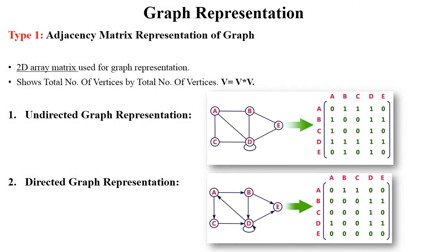Next is graph representation. A graph can be represented in two ways: matrix format or linked list format. The first type is adjacency matrix representation. For adjacency matrix, we use a two-dimensional array matrix of size number-of-vertices × number-of-vertices. Let's look at the undirected graph representation and the directed graph representation.